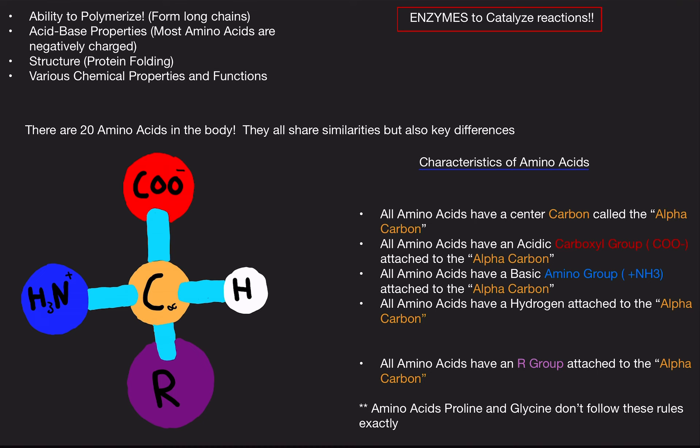And we're going to go over those four things. So all amino acids have a carboxyl group. This right here is the carboxyl group. And it's acidic. That's very key to understand, is that the carboxyl group is acidic. And it is attached to the alpha carbon.